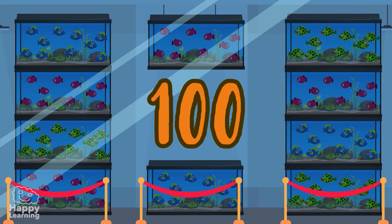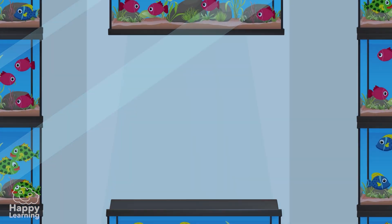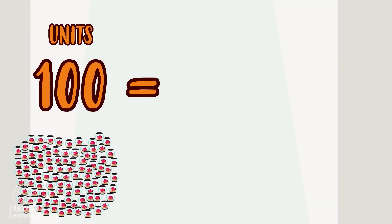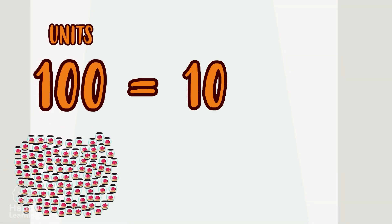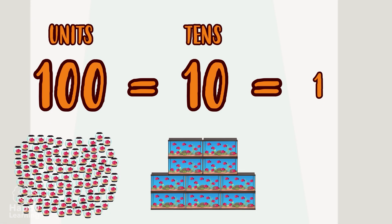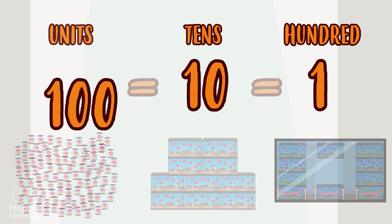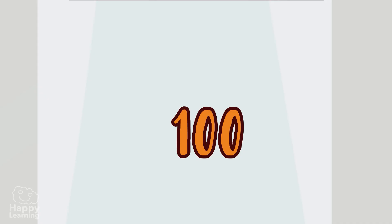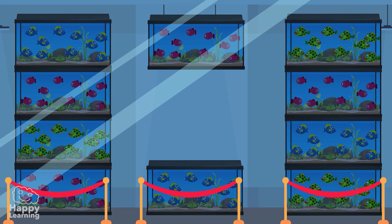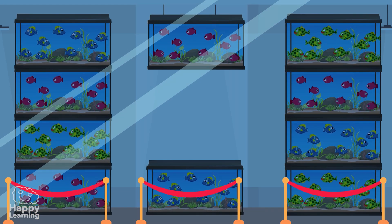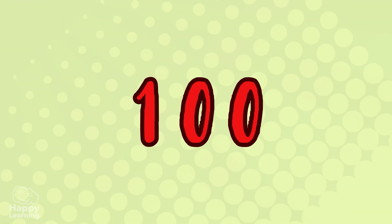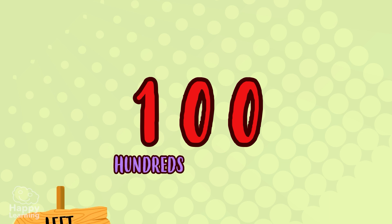One hundred units! One hundred fish! That would be equal to ten tens, or a hundred — one hundred! There are so many fish, I wish we could keep them all! The number a hundred has three digits. The hundreds are written in the third position, starting from the right.